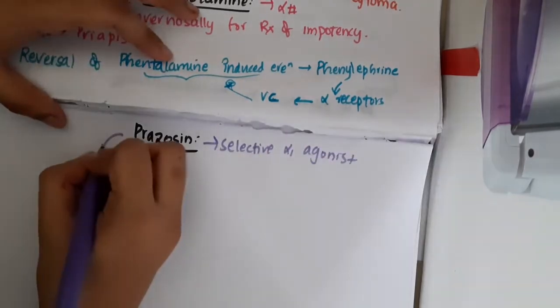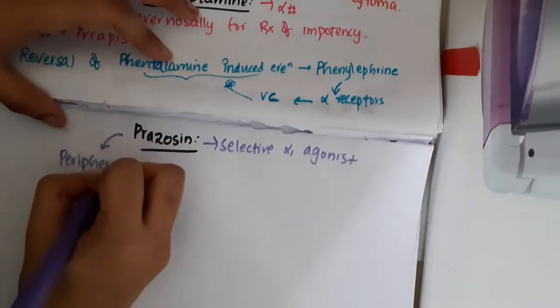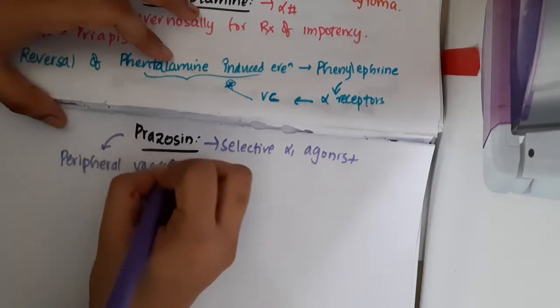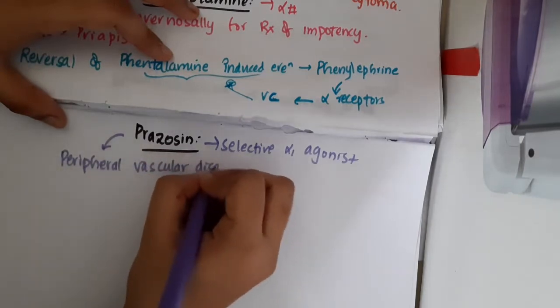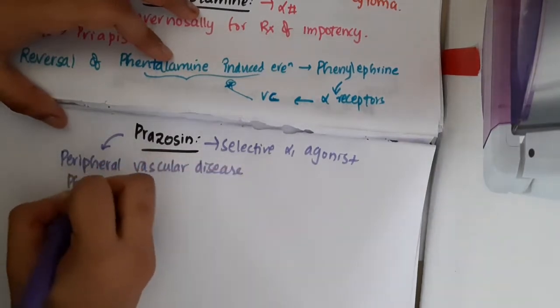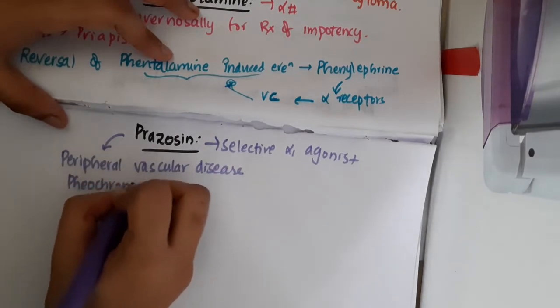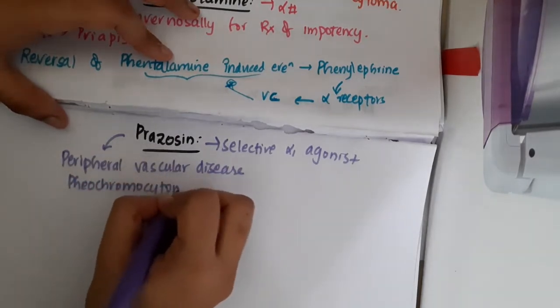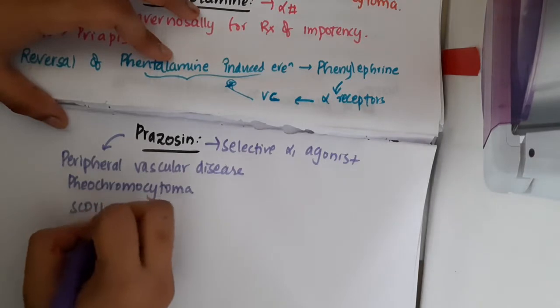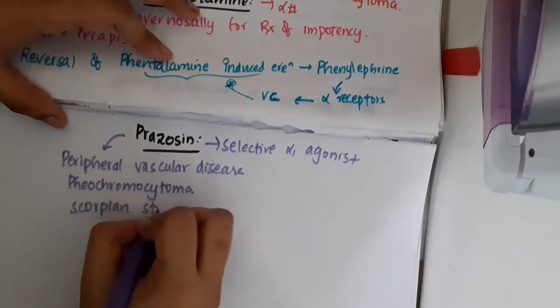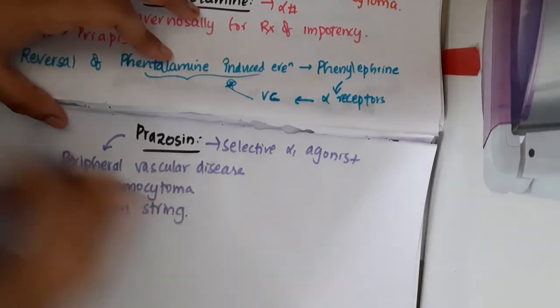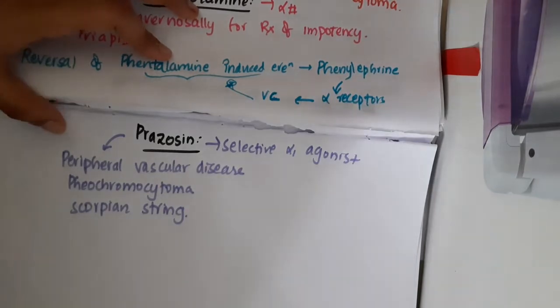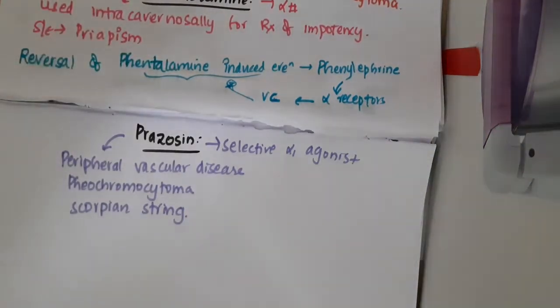This prazosin is used in peripheral vascular disease, pheochromocytoma, and scorpion sting bite.